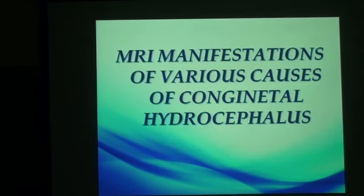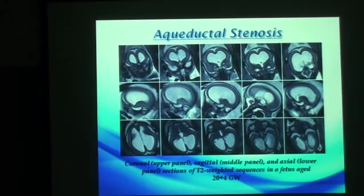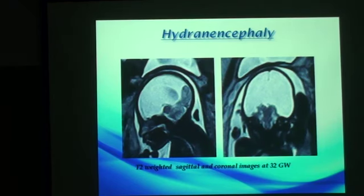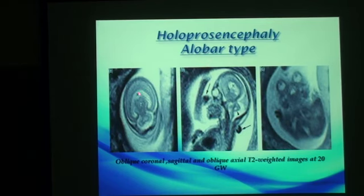Let us discuss some of the MRI manifestations of various causes of congenital hydrocephalus. Aqueductal stenosis is the most common type of simple congenital hydrocephalus. We can see supratentorial dilatation of the lateral ventricles and the third ventricle, yet the fourth ventricle is normal in size. In hydranencephaly, the brain is completely replaced by CSF with only remnants of the thalami and occipital lobe. We can identify it by the presence of an intact falx, to differentiate it from the alobar type of holoprosencephaly, in which there is absent interhemispheric fissure, falx, corpus callosum, and septum pellucidum.